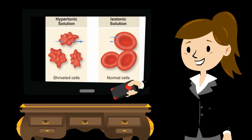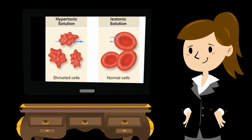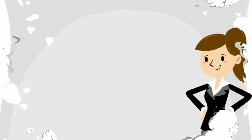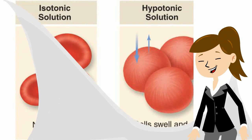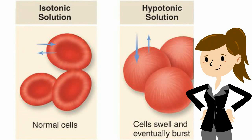In hypertonic dehydration, water is lost more than the electrolytes, so fluid is going to move from the intercellular compartment — inside of the cell — out into the plasma or interstitial fluid space, causing the cells to shrink. In hypotonic dehydration, the patient is losing more electrolytes than water, so fluid moves from the interstitial space into the cell, causing the cells to swell.